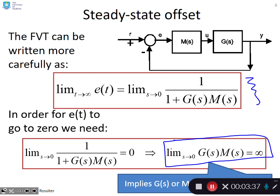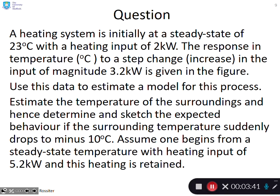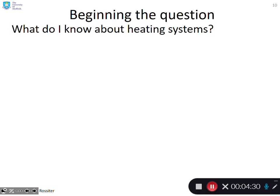Now let's go to a question. Your heating system is initially at a steady state of 22 degrees with a heating input of 2 kilowatts. The response in temperature to a step change increase in heating of magnitude 3.2 kilowatts is given in the figure. Use this data to estimate a model for this process. Generally speaking, I wouldn't read the second part until I have done the first part.